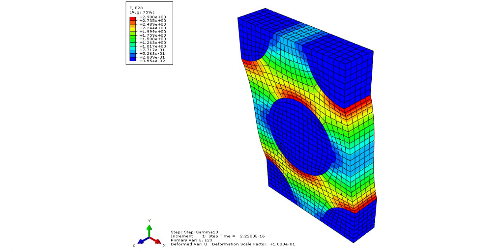In this example, we illustrate computational micromechanics. You will learn how to calculate material properties for the composite in terms of the properties of the fiber and matrix. We use 3D modeling of a unit cell, also called RVE. You will also learn how to apply periodicity conditions.